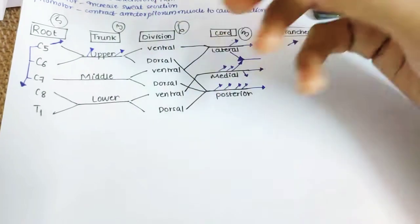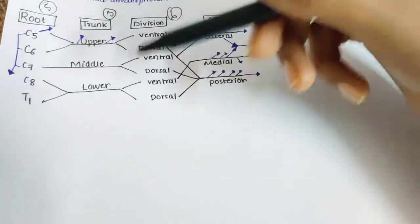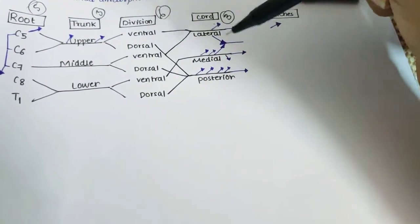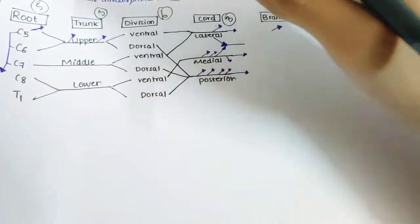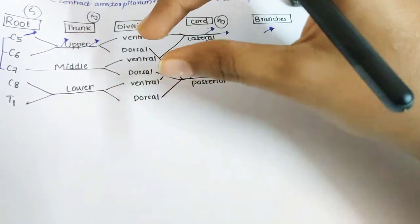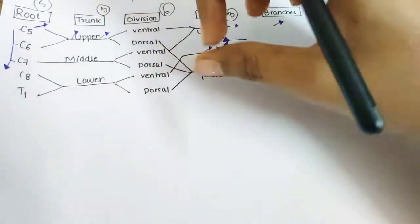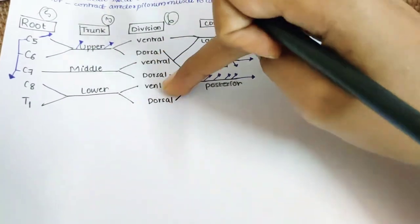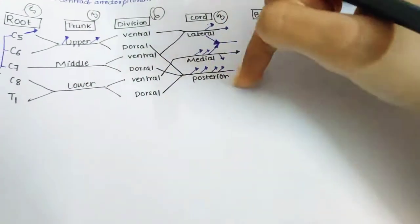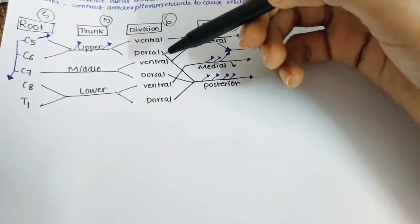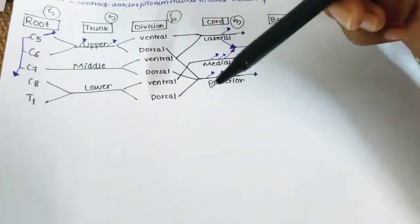The ventral division of the upper trunk and the ventral division of the middle trunk together unite to form the lateral cord. The medial cord is formed by only one division — the ventral division of the lower trunk. The posterior cord is formed by all three dorsal divisions: the dorsal division of the upper trunk, the dorsal division of the middle trunk, and the dorsal division of the lower trunk.